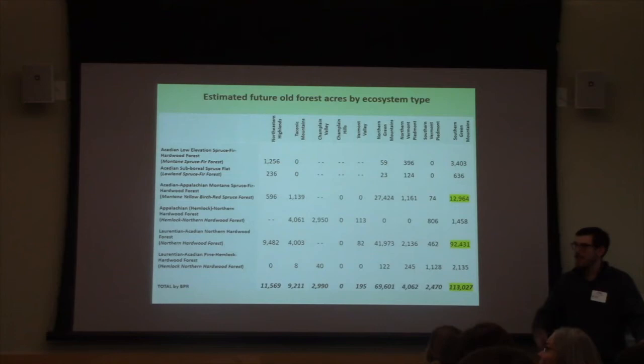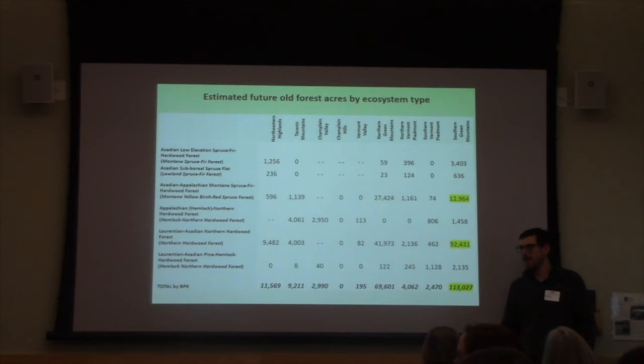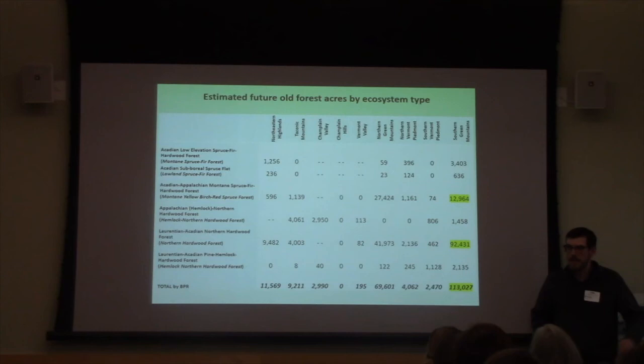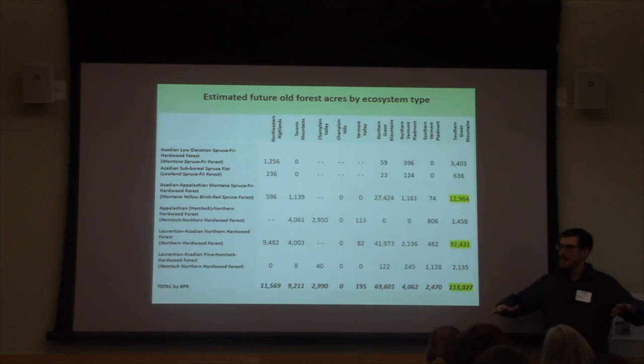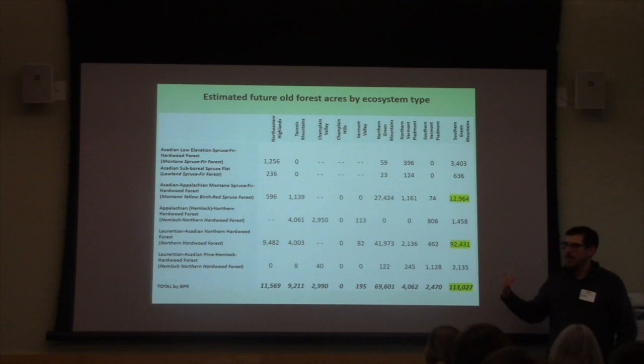Question: Is there any idea how much young forest we're generating through natural disturbance annually? Response: I don't have a good sense of that number. What I do think is that our middle-aged forest, because it's not structurally diverse, is less prone to natural disturbance. If it were all old forest, I think we'd get 3–5% naturally. But the way it is now, trees aren't dying as much and aren't as susceptible as they're going to be, so we have a lower rate of disturbance. But what exactly that rate is, I don't know.